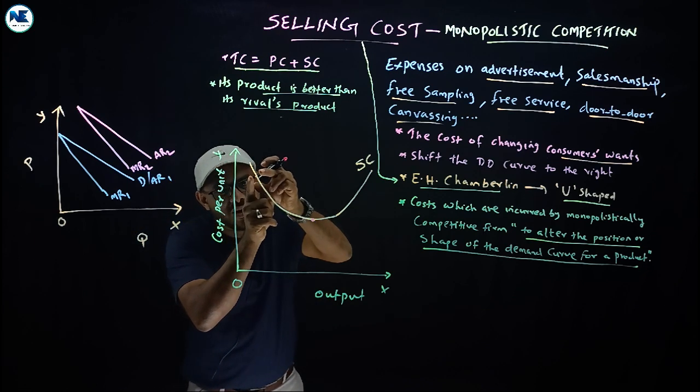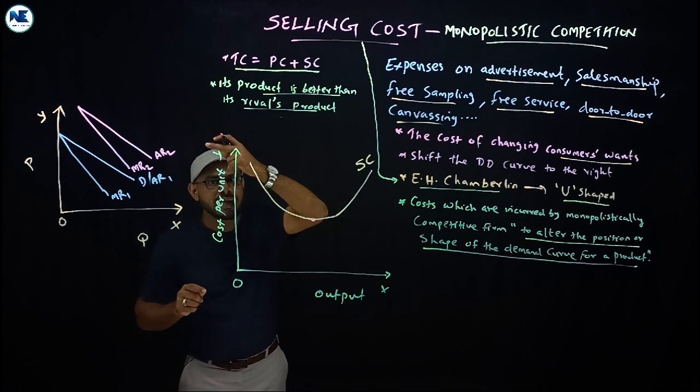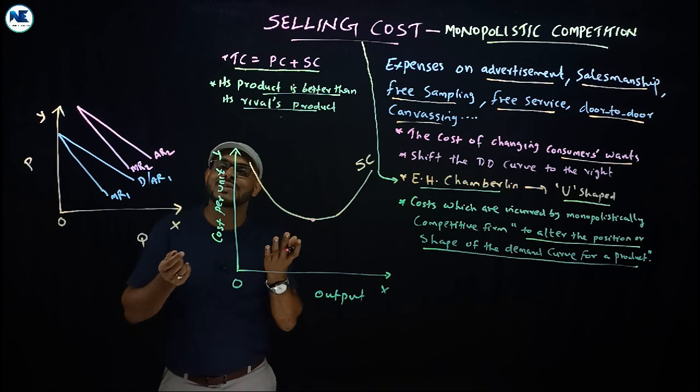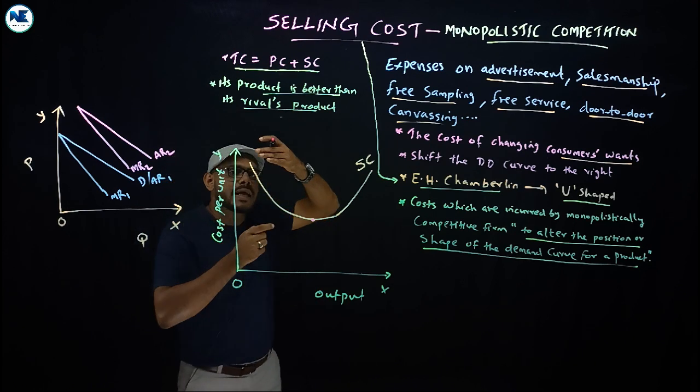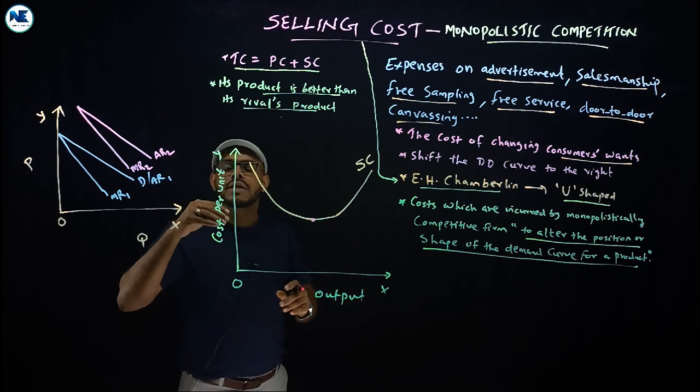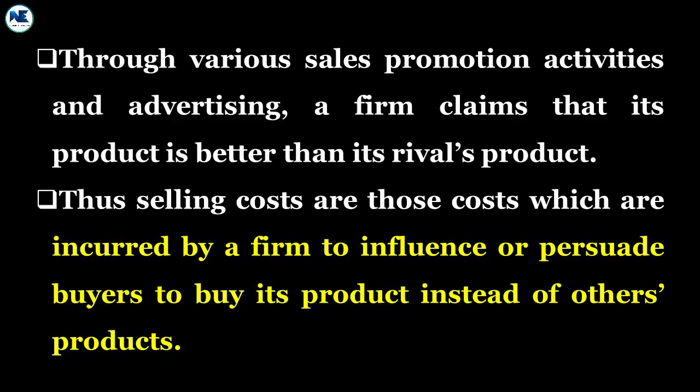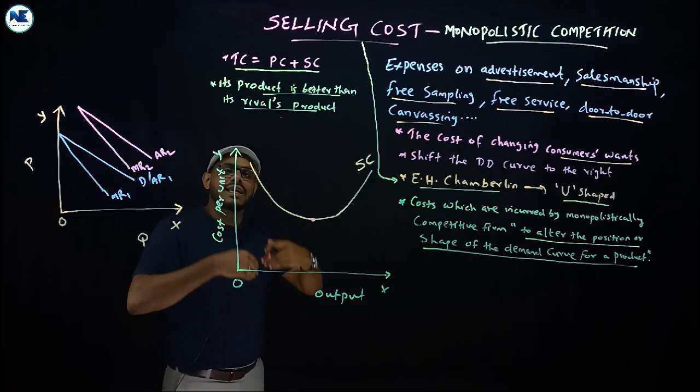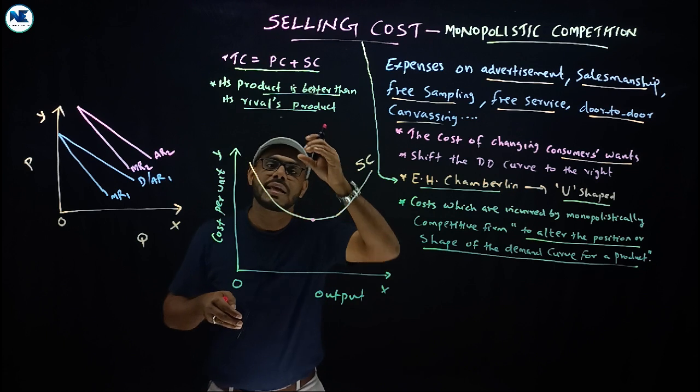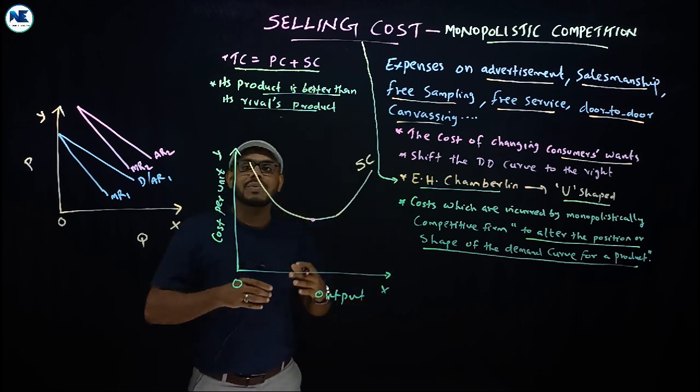Initially, selling cost falls and then reaches the minimum point. After that, selling cost will rise. It is because of the operations of the law of variable proportions. The average cost is impacted by the law of variable proportions. In the initial stage, selling cost is more than the output. This is because firms need to influence customers and create awareness. The selling cost is huge initially, and then the output increases, so selling cost per unit falls.